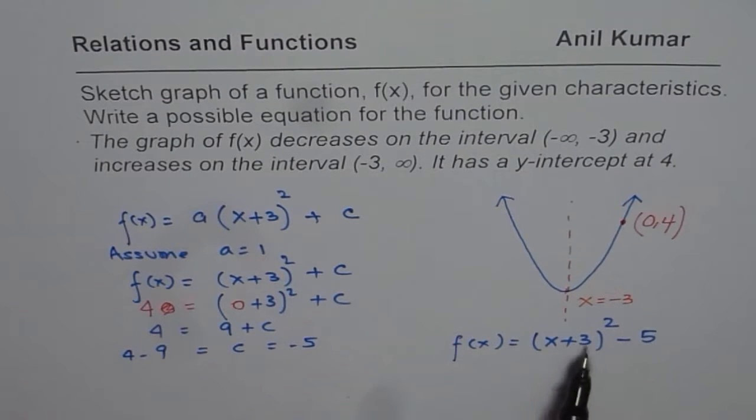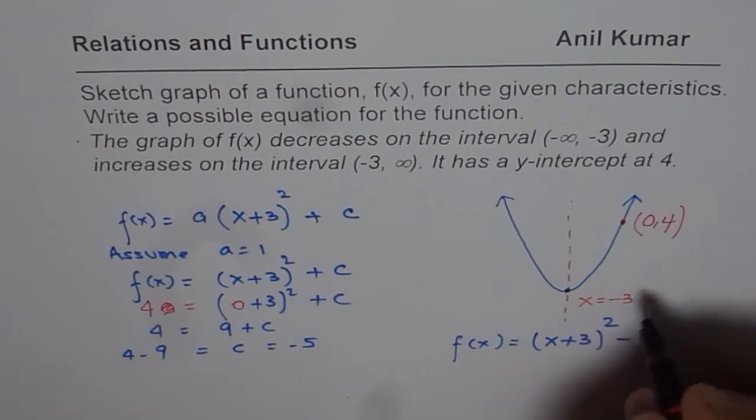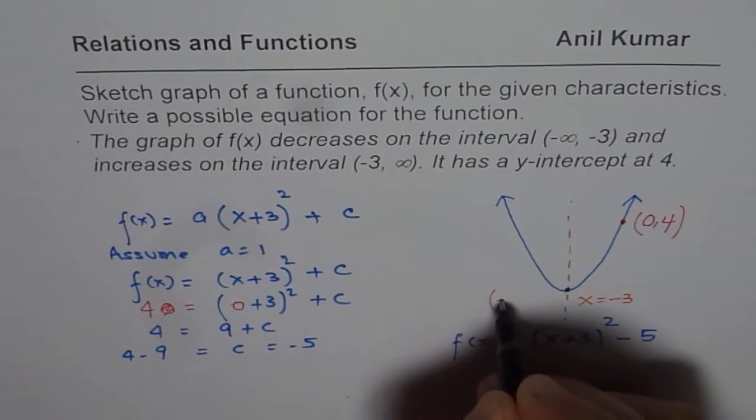From here you also know that the vertex actually is at -5. So this point will be (-3, -5). Right? For the graph and for the values which we have taken for a equals 1.